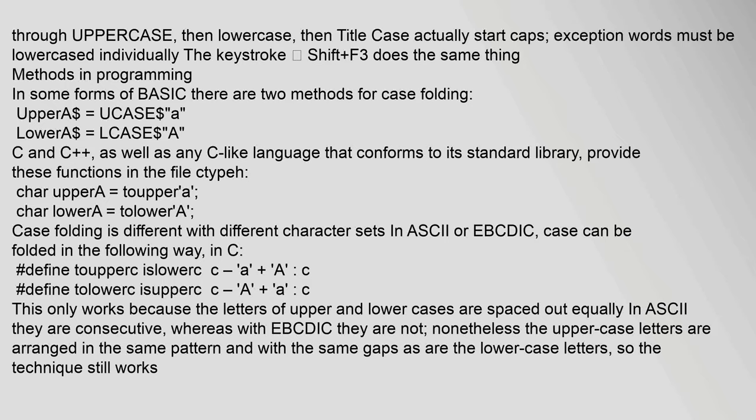In word processing, cycling through uppercase, then lowercase, then title case can be done; the keystroke Shift+F3 does the same thing. In some forms of BASIC, there are two methods for case folding: UPPER$(A$) = UCASE$(A$) and LOWER$(A$) = LCASE$(A$). C and C++, as well as any C-like language conforming to its standard library, provide these functions in the file ctype.h: char upper(a) = toupper(char) and char lower(a) = tolower(a).